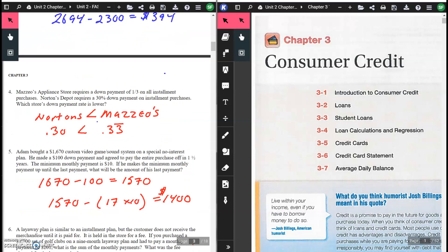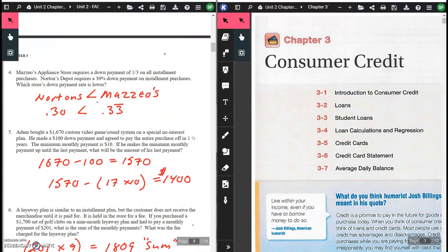Number four: Mazio's Appliance Store requires a down payment of one-third on all installment purchases. Norton's Depot requires 30% down on all purchases. Which store's down payment rate is lower? Norton's was 30% and Mazio's was one-third. One-third as a decimal is 0.33, so that would be 33.3%. 30% is less than 33%, so Norton is the better deal.